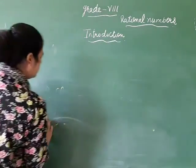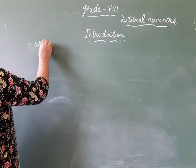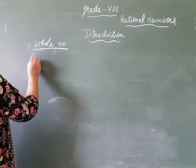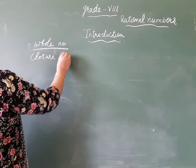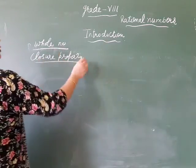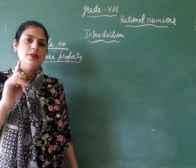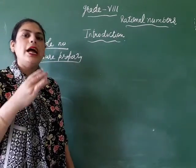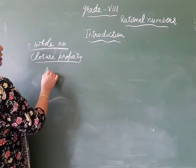Let's start with the first property: closure property. Under closure, we have four operations — addition, subtraction, multiplication, and division. So under addition, let's elaborate.